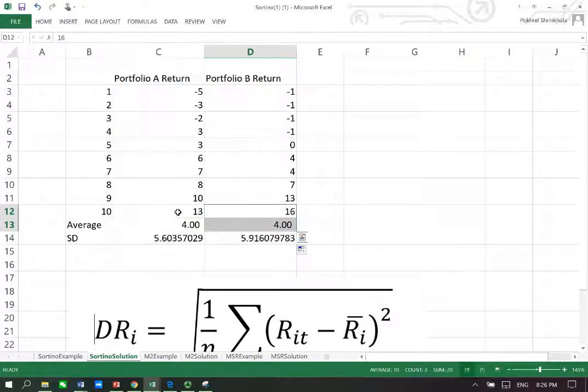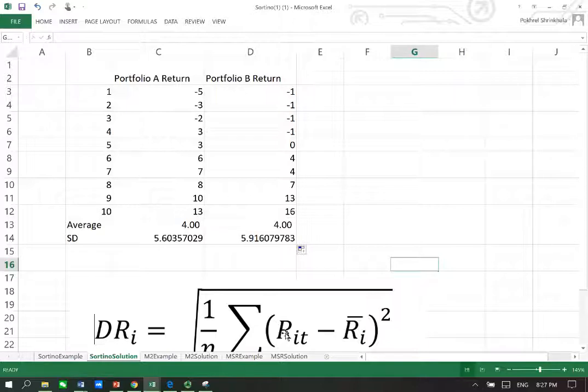In this example, the average for both portfolios are equal to 4. This 4 is basically representing this number here. So what we need now is each of these returns minus the 4.